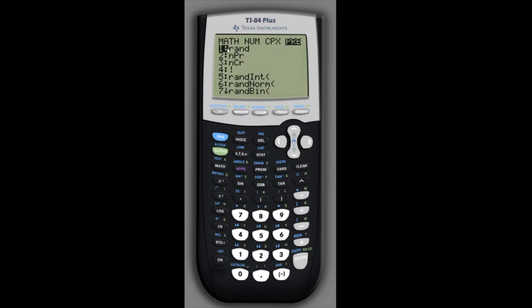We have some random number generators including rand which will give us a random number between zero and one. That's not quite what we want here. We want random integers so we'll select number five, randint, which gives us random integers.